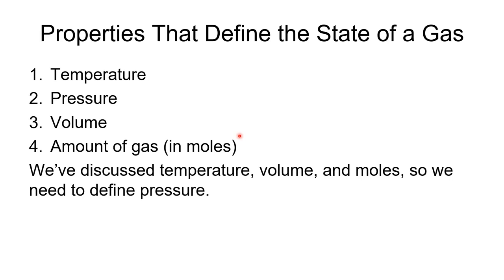So we'll find that there are certain properties that define the state of the gas. And we're going to be looking at those properties. This is what we'll spend most of our time on during this section. And that will include temperature, pressure, volume, and the amount of gas. We will look at how all of those things are related. But we need to define pressure. We know what temperature is. We've talked about that before. We know what volume and we know what moles are. We spent a lot of time in chapters three and four talking about moles. What we really want to get to is the concept of pressure.